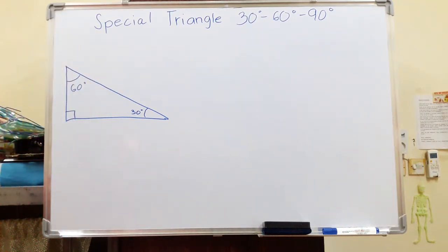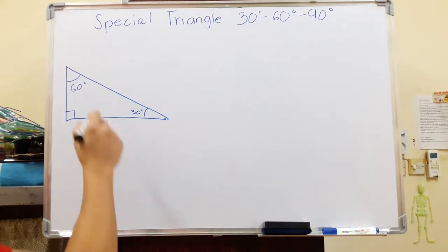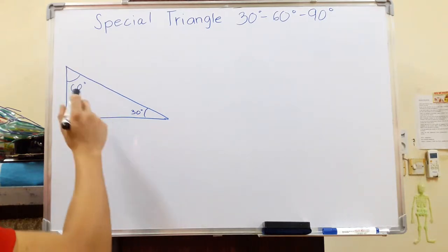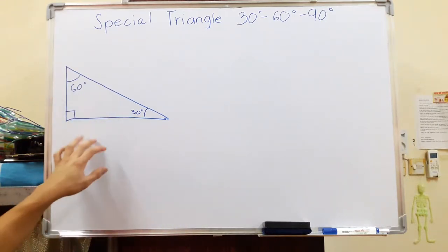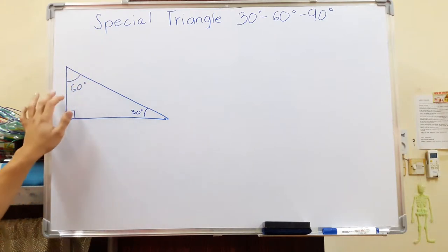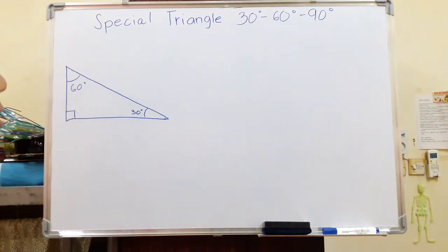We're going to discuss this special triangle — the 30-60-90 degree triangle. When we have a 30-60-90 degree triangle, we can actually find the sides without even using SOHCAHTOA, so we're going to do it without using a calculator.